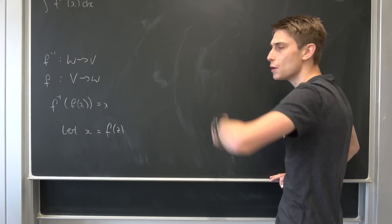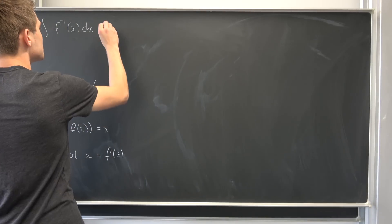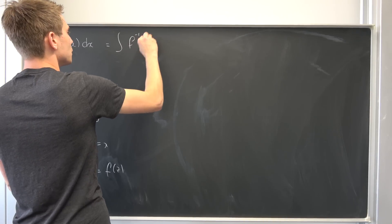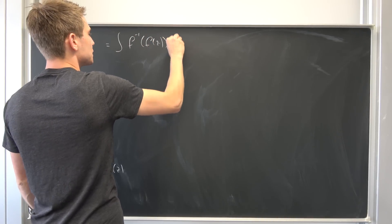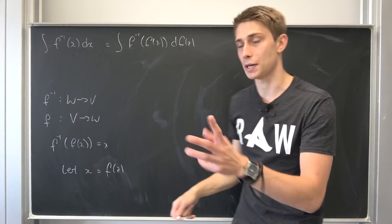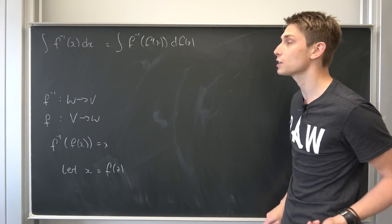So why not plug our new x into here into this integral? So we end up with the integral from f to the minus 1 of f of z d f of z. And this might look quite weird, but it does work actually.